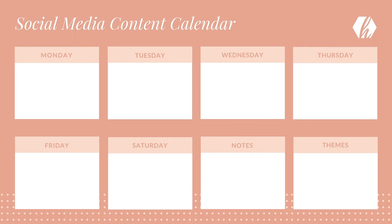Let's do a sample content calendar together. On Mondays you can feature a local hotspot — maybe a new restaurant that just opened up or a new shop that people are raving about, anything that's local and hot. Real estate tips on Tuesday: just make a quick list of all of the most common questions that you get, and then answer those questions. Wednesday is Community Spotlight — anything community related, like construction going up, a dog that needs a new home, or someone who did a great job on a local sports team.